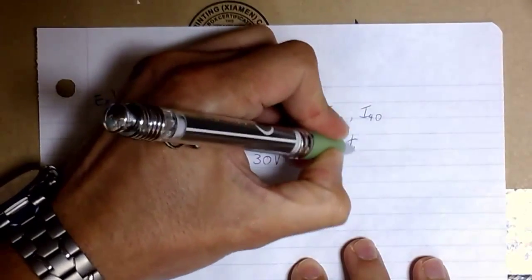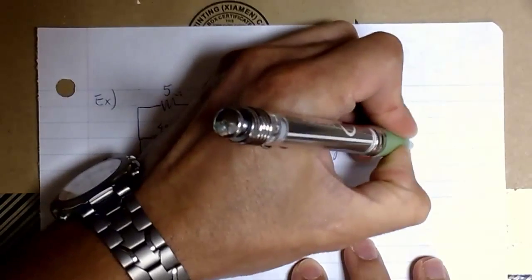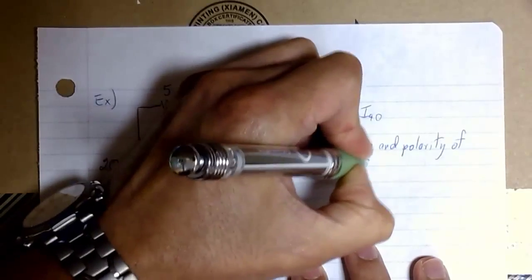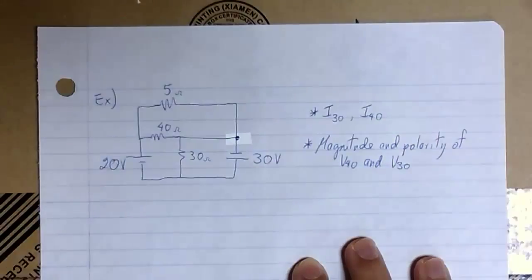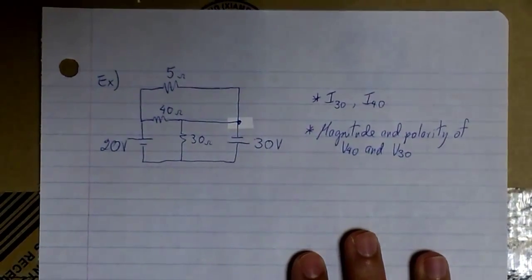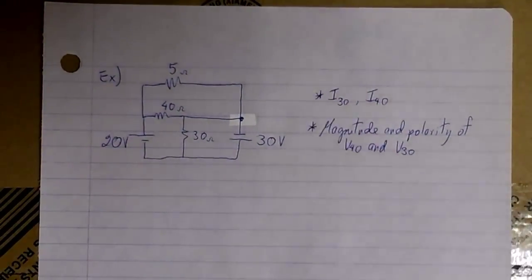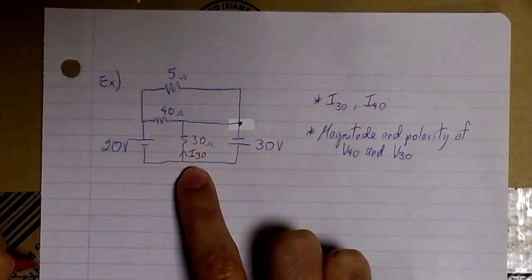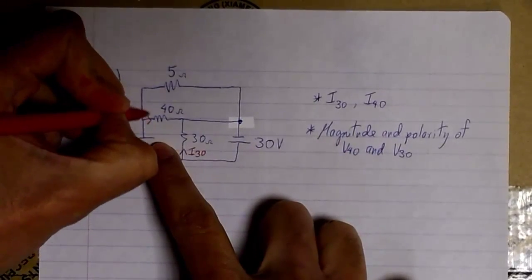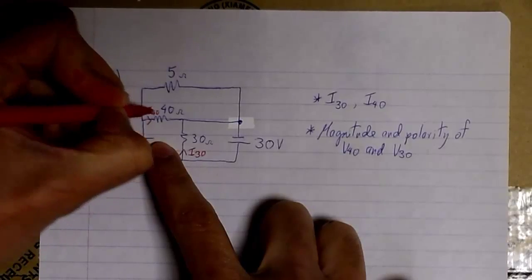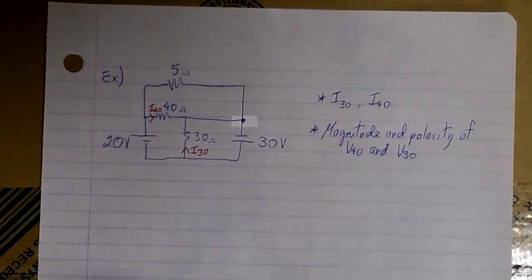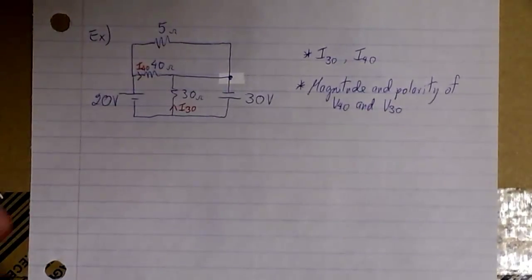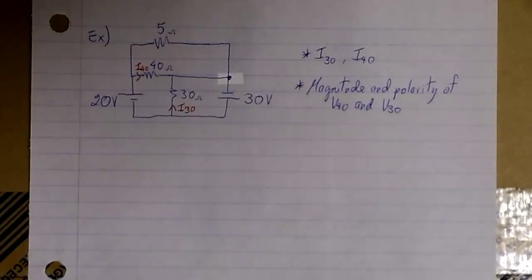We're interested in finding the current flowing through the 30 ohm resistor and the current flowing through the 40 ohm resistor. I30 is this current and I40 is this one. I'm just guessing the direction — I really don't know the direction of the current, but I'm assuming that is the direction of those currents. If we get negative numbers, we just need to flip the direction. We're going to solve this problem using superposition.